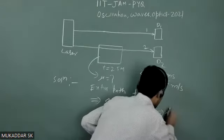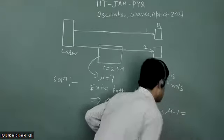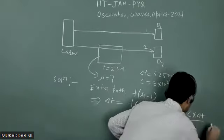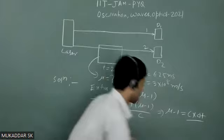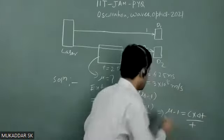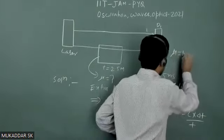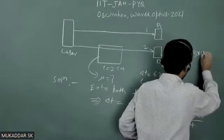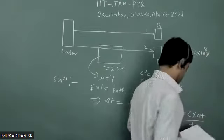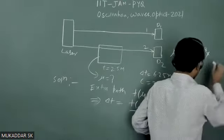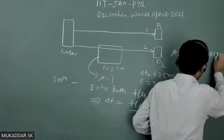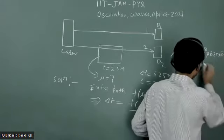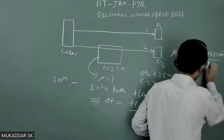What I can write, that mu minus 1 will be C into delta T divided by T. It means mu will be 1 plus C, which is 3 into 10 to power 8 meter per second, and that delta T is 6.25 into 10 to power minus 9, and you have T, T is basically 2.5.